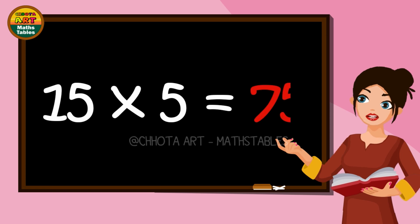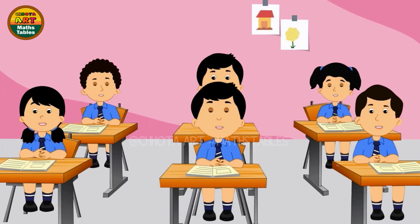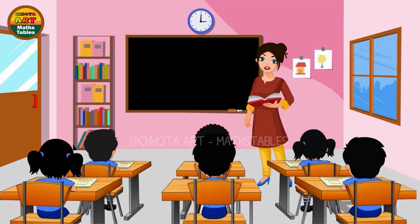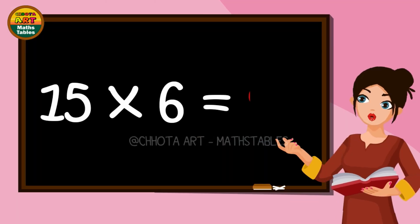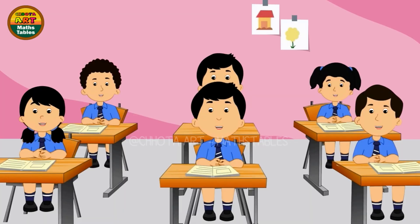Fifteen fives are seventy-five. Fifteen sixes are ninety.